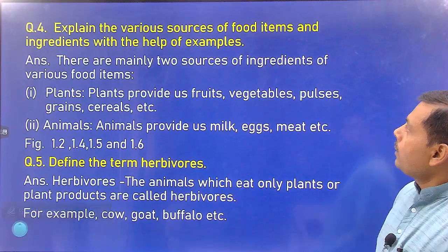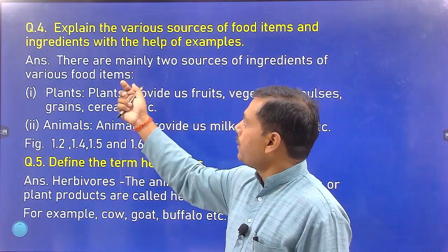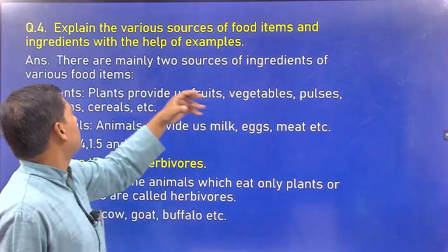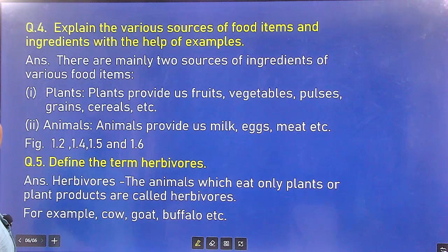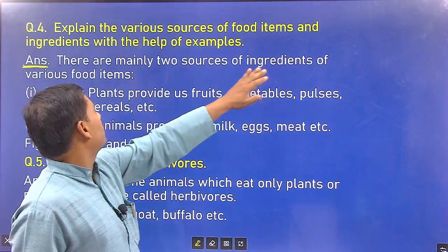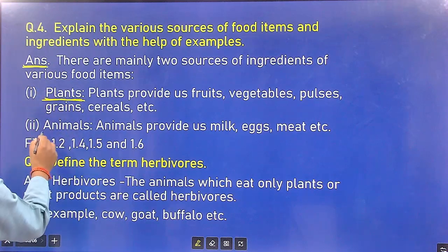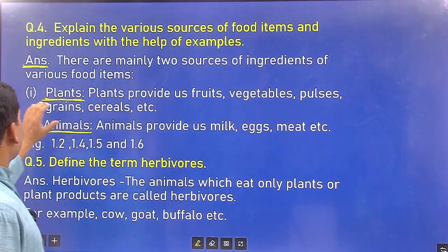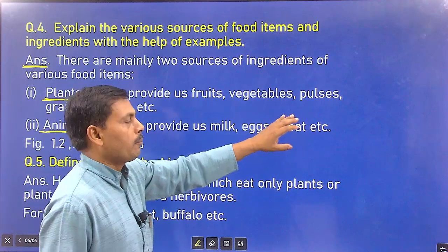Next question: Explain the various sources of food items and ingredients with the help of examples. There are mainly two sources of food: plants and animals. Plants provide us food — vegetables, pulses, grains, cereals, etc. Animals provide us milk, eggs, meat, etc.